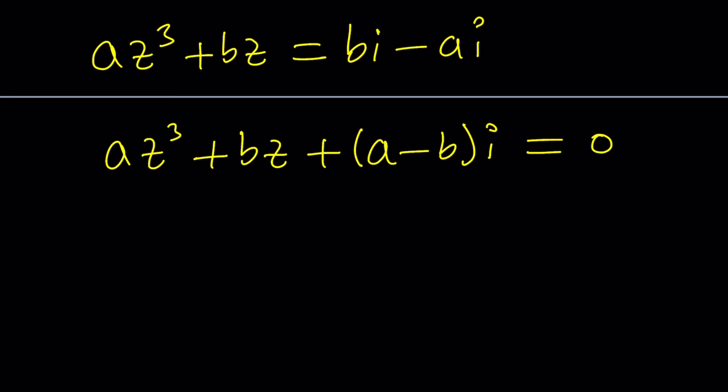So here's how we proceed. To be able to solve this first, we have to get rid of the A. So let's divide everything by A. We get Z cubed plus B over A Z plus A minus B over A multiplied by I equals zero. Since A is not going to be zero, we assumed at least that in this case A does not equal zero. We're allowed to divide by A.